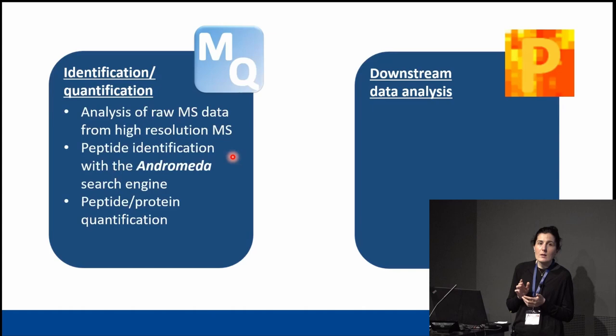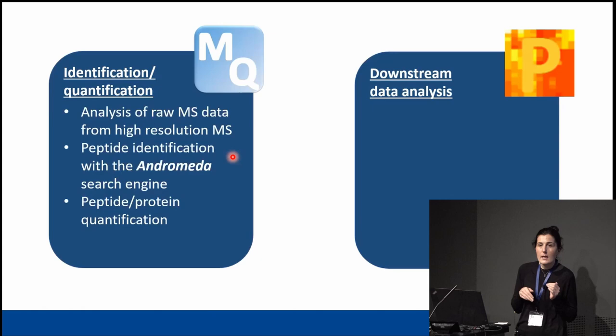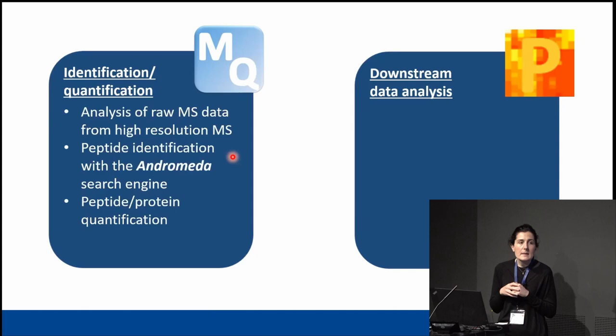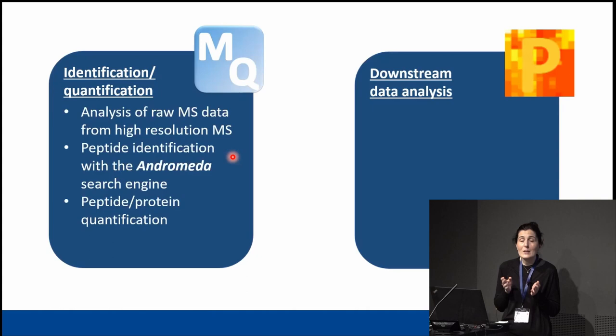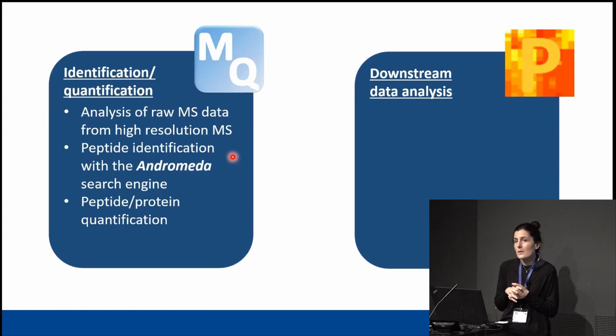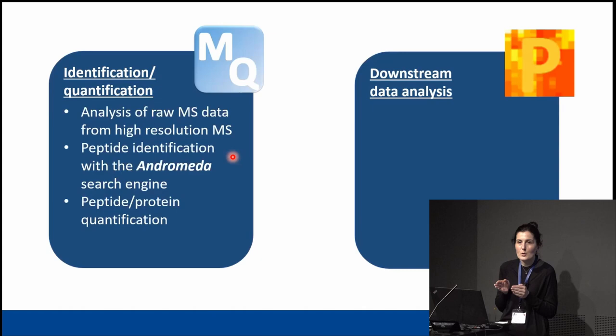All of this information is summarized in different output tables. When MaxQuant finishes running, you will have a list of output tables, and each one gives you information at a different level. For example, if you want identification information at protein group level, you go to the protein groups TXT file. If you want feature-level information, you go to the evidence TXT file.